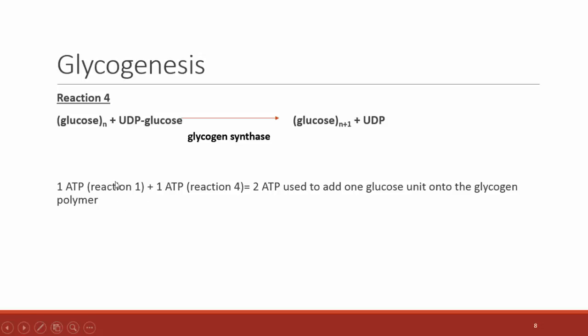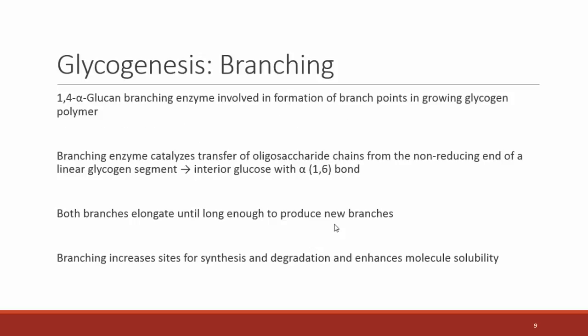In reactions 1 and 3 we each use one ATP, so in total it takes 2 ATP to add one glucose molecule onto an existing glycogen chain. Glycogen synthase allows for the addition of glucose molecules with alpha-1,4 linkages only. But if we could only add alpha-1,4 linkages, we would have just one long line of glucose. We know glycogen needs to be a highly branched molecule, so we need more than that.